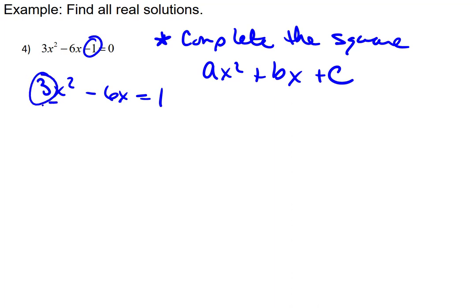Then we want to divide by a if it's not 1, and it's not here. That means we want to divide everything by 3 all the way down.